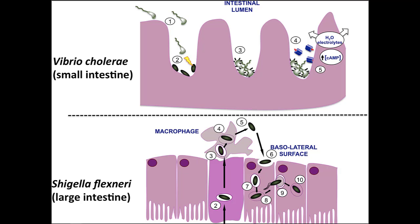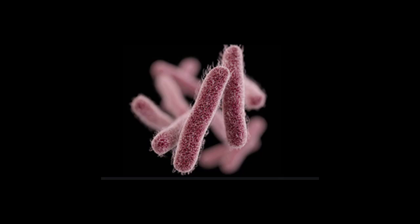Shigella is a gram-negative rod-shaped bacteria that causes gastroenteritis. It leads to watery diarrhea and then bloody diarrhea. It can grow green colonies on Hektoen agar, it's Endo positive, and it's different from Salmonella in that Salmonella grows black colonies.